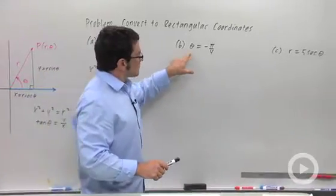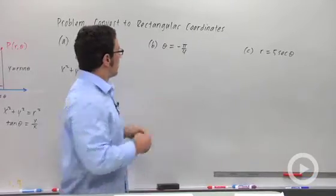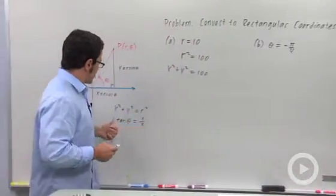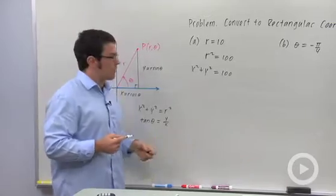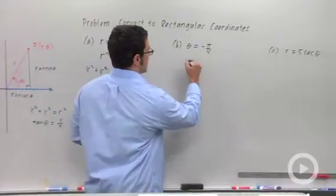And then for b, theta equals minus pi over 4. Here, I remember that I have this equation tangent theta equals y over x. So let me take the tangent of both sides.